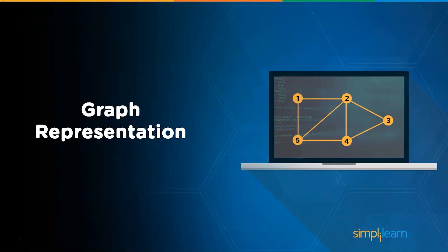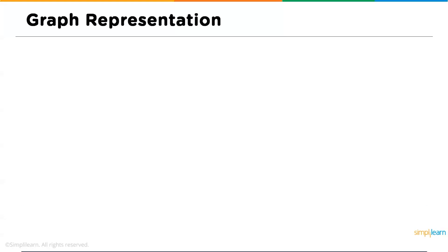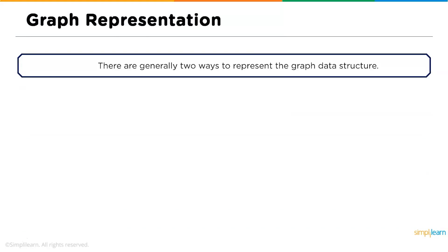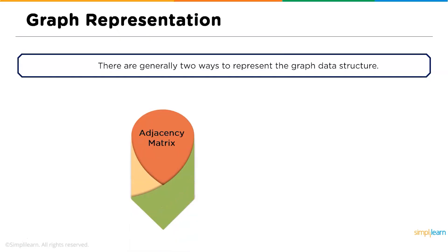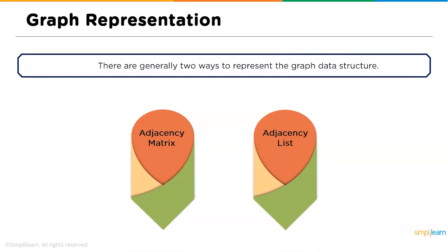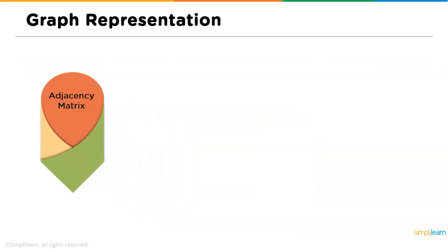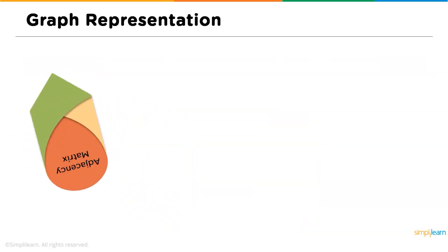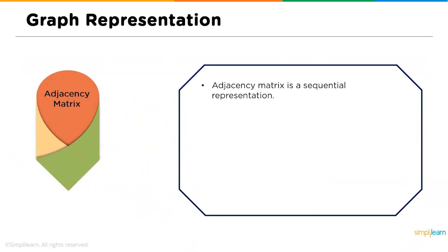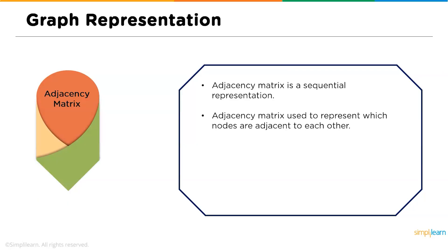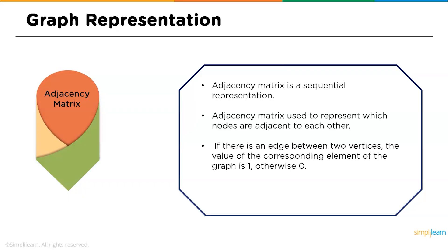Moving ahead we have graph representation. Generally there are two different ways to represent a graph data structure: using adjacency matrix and adjacency list. Adjacency matrix is a sequential representation used to show which nodes are connected to which node. If there is an edge between two vertices, the value of the corresponding element is one; otherwise zero.